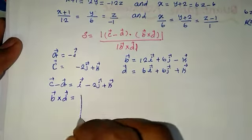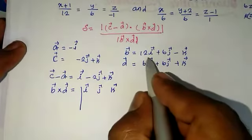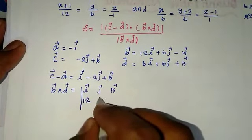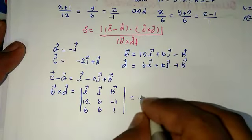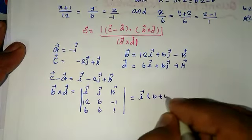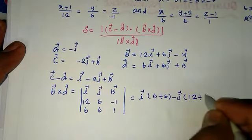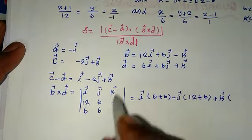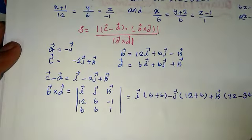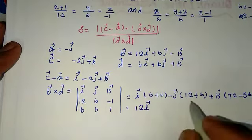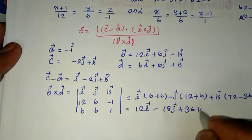Now we compute b vector cross d vector as the determinant of i, j, k with rows 12, 6, minus 1 and 6, 6, 1. This gives: i vector into (6 plus 6), minus j vector into (12 plus 6), plus k vector into (72 minus 36). That equals 12i vector minus 18j vector plus 36k vector.